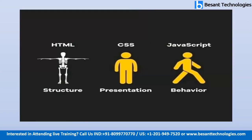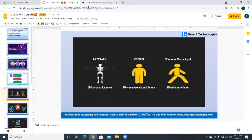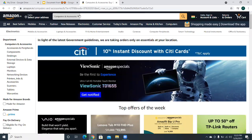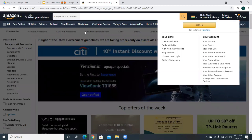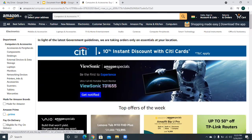The visible part of the website is the front end, built using three different languages. First, HTML — to start a website from scratch, draw a skeleton or outline. HTML decides what contents appear on the page. For example, on Amazon, the logo, the search bar, the login settings — all the content you see on screen is decided by HTML. The current version we use is HTML5.